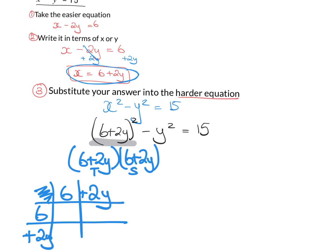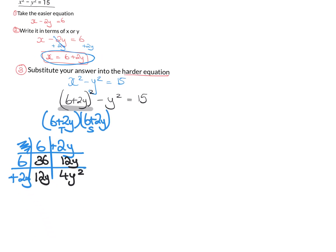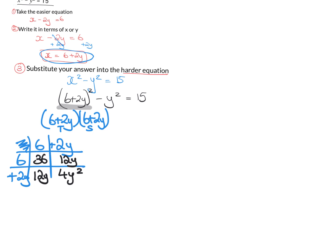So 6 multiplied by 6 is 36. 6 multiplied by 2y is 12y. 2y by 6 is 12y again. And 2y by 2y is 4y squared. So I'm going to write all of that down. So I have 36 plus 12y plus 12y plus 4y squared. Remember that was me working out this part here. So I have to still add in the rest of the sum. So the rest of the sum is this bit here, which is minus y squared equals 15.